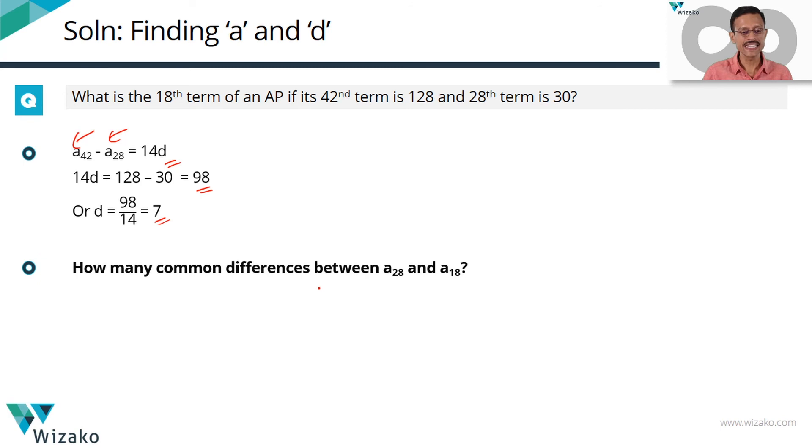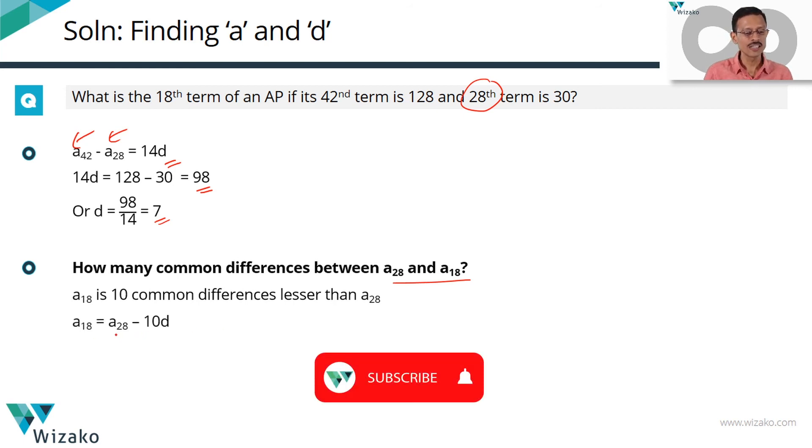We need to find out the 18th term. So let's ask how many common differences exist between the 28th and the 18th term, because we know the value for the 28th term. There will be 10 such common differences. So the 18th term is nothing but the 28th term minus 10 times a common difference. Plug in the value for this and the value of d. So it will result in the 18th term being minus 40.